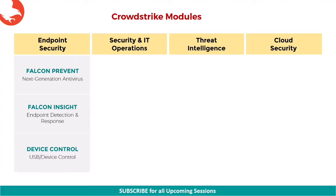The first solution offered is Endpoint Security. The three modules that are part of Endpoint Security are Falcon Prevent, Falcon Insight, and Falcon Device Control. The first module is Falcon Prevent, which is the next-gen antivirus module. Falcon Prevent provides comprehensive and proven prevention against malware and malware-free attacks, whether endpoints are online or offline. Its capabilities include identifying known malware, machine learning for unknown malware, exploit blocking, and exclusive indicator of attack behavioral techniques.